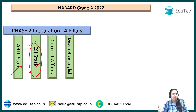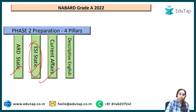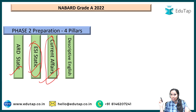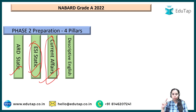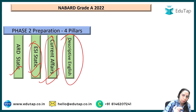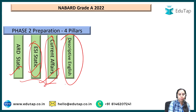Then current affairs — very, very important. I would say it is a pillar of your preparation for ESI, ARD, as well as General Awareness, which is there in Phase 1. And then descriptive English — this is only about Phase 2. These are the four pillars.